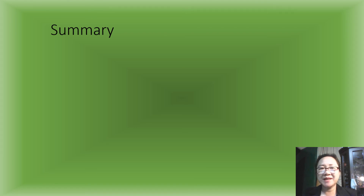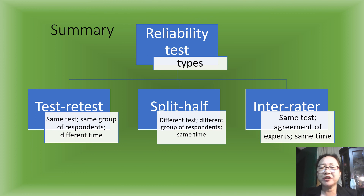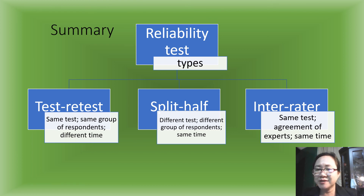To sum it up, here are the different types of reliability tests. Test-retest: the same test is administered to the same group of respondents at different times. Split-half: a different test is administered to different groups of respondents at the same time. Inter-rater reliability: the same test with agreement of experts at the same time.